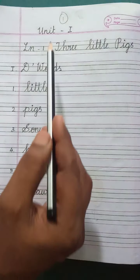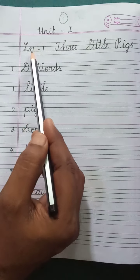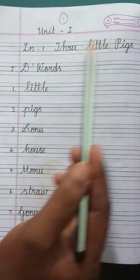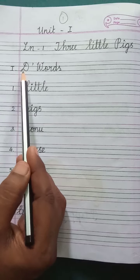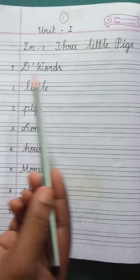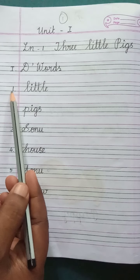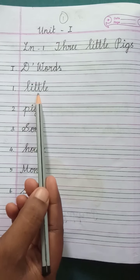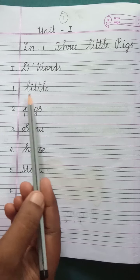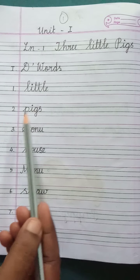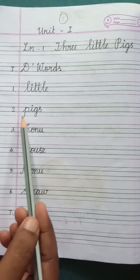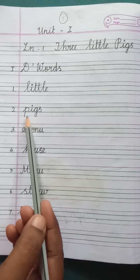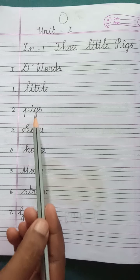Unit 1, Lesson 1, Three Little Pigs. Roman Letter 1, D Words. Number 1: Little. L-I-T-T-L-E, Little. Number 2: Pigs. P-I-G-S, Pigs.